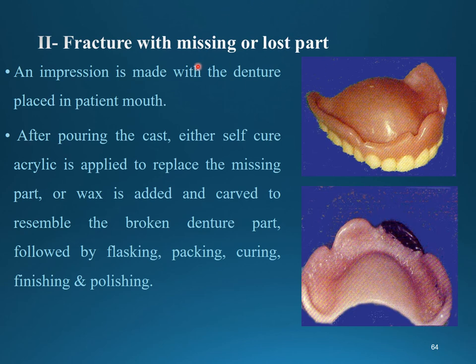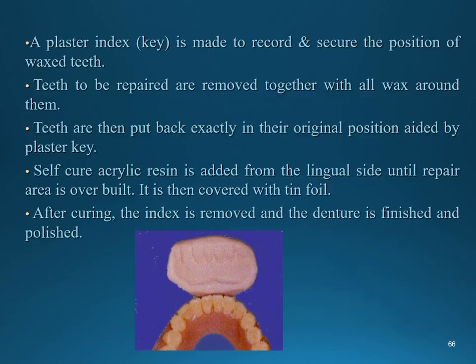For a fracture with a missing or lost part: an impression is made with the denture placed in the patient's mouth. After pouring the cast, either self-cure acrylic is applied to the missing area or wax is added and carved to reassemble the broken denture part. The whole thing is then flasked, packed, cured, finished, and polished.